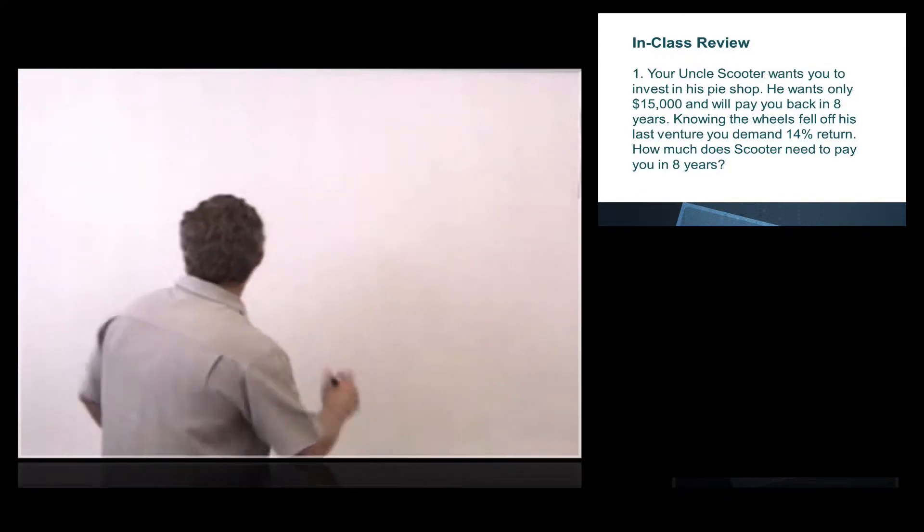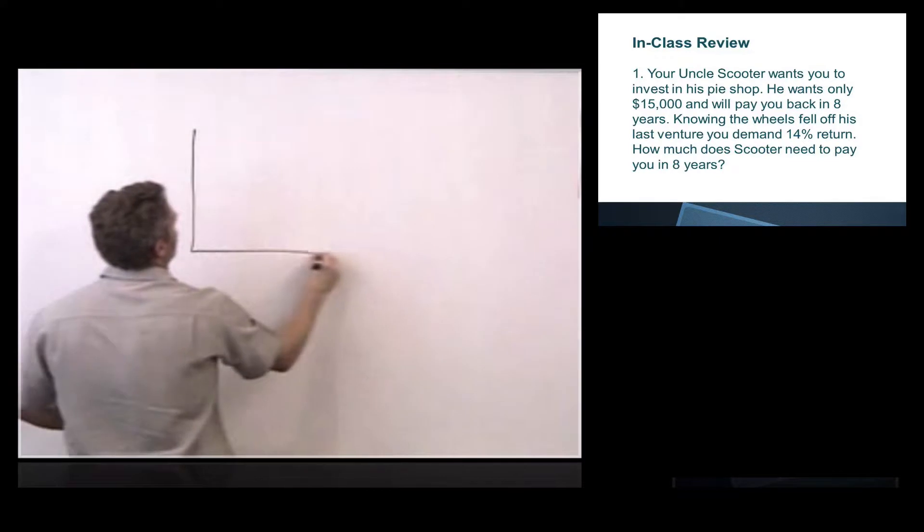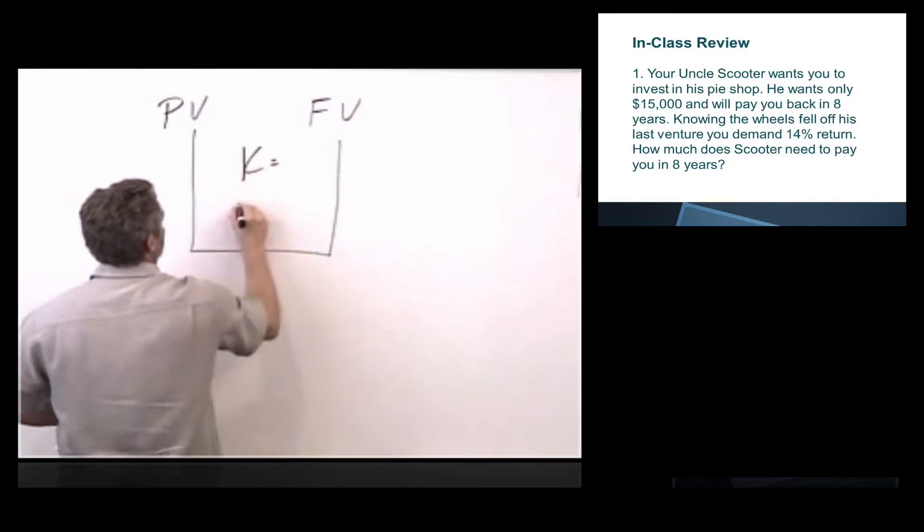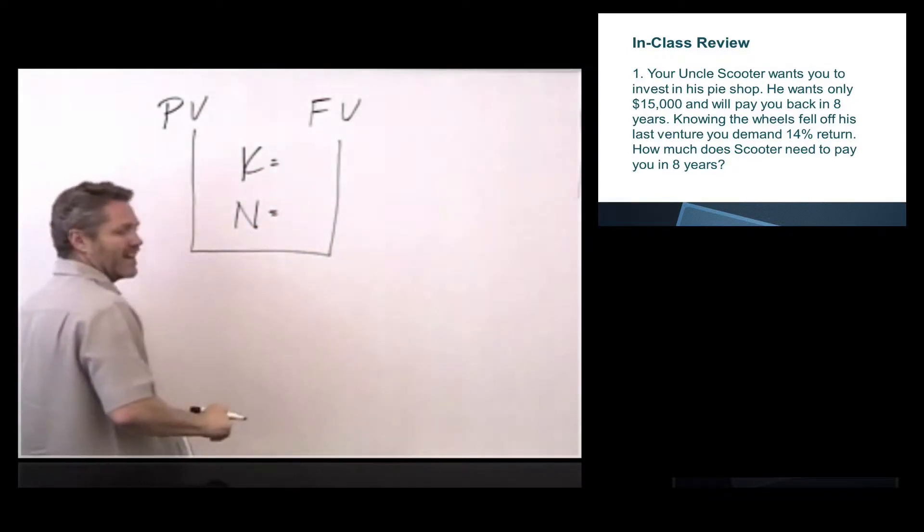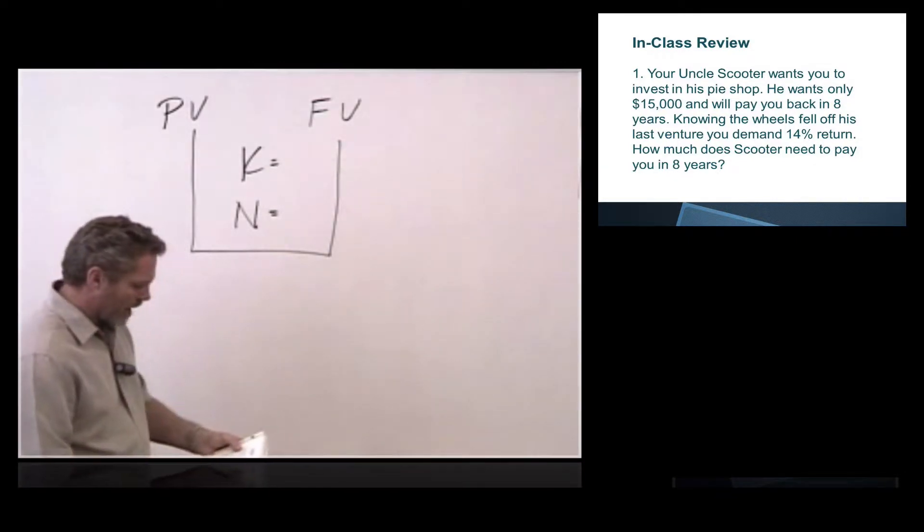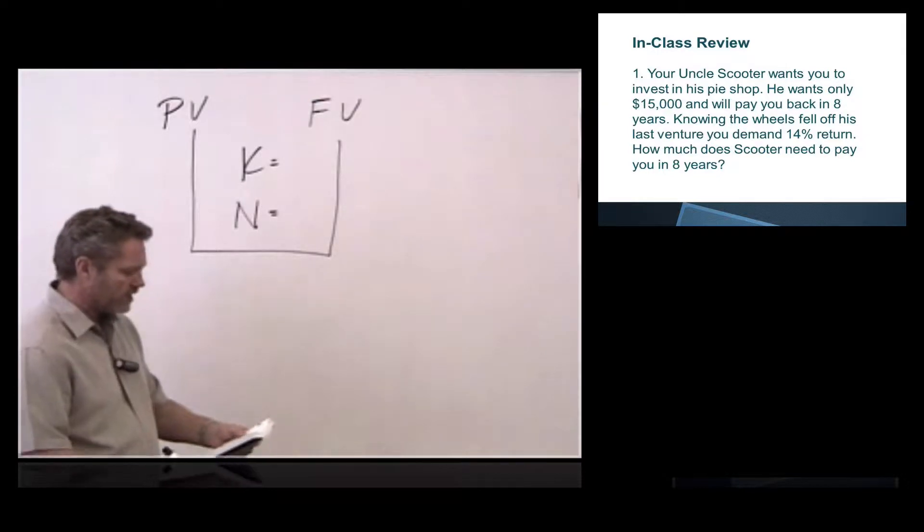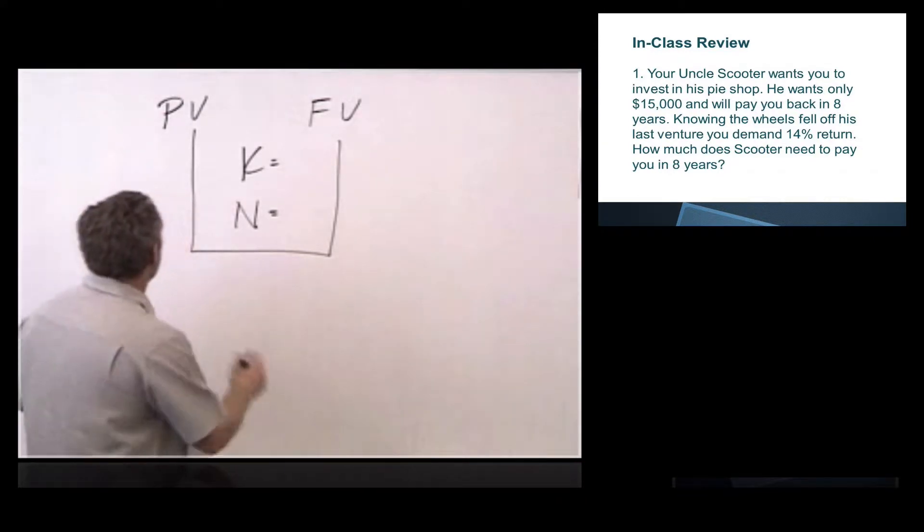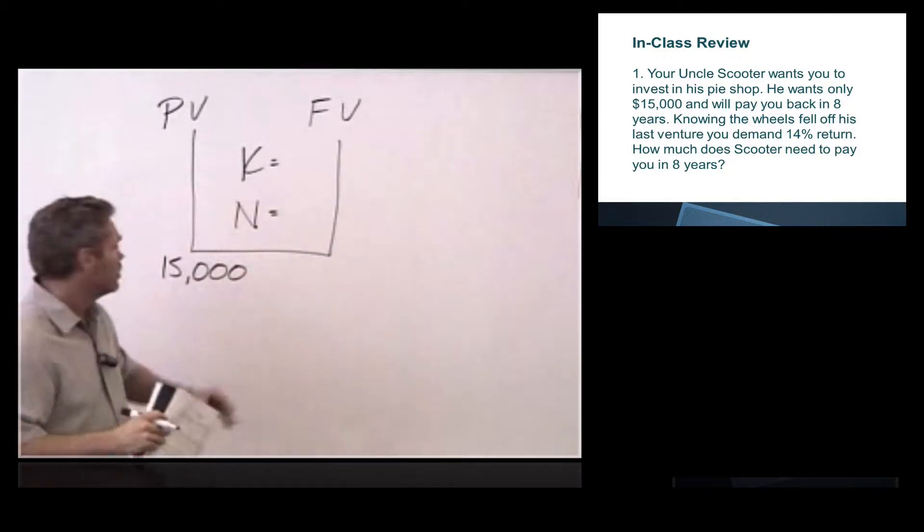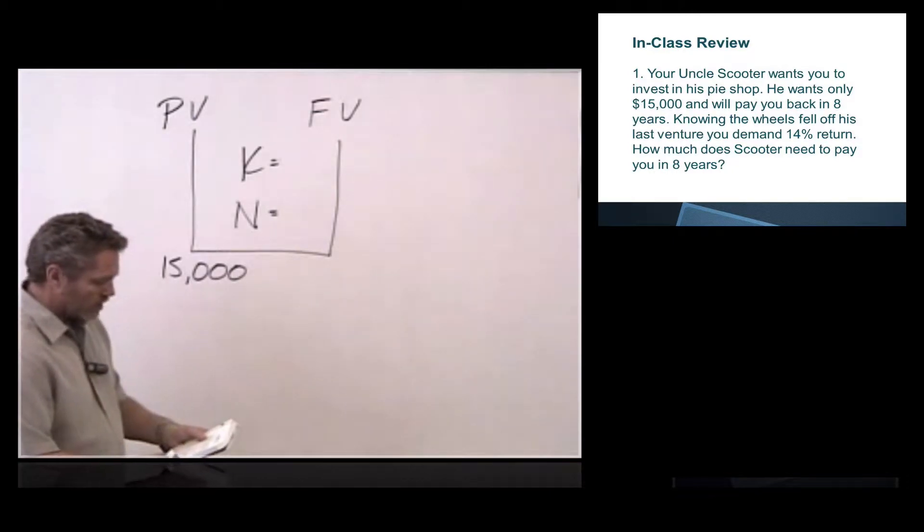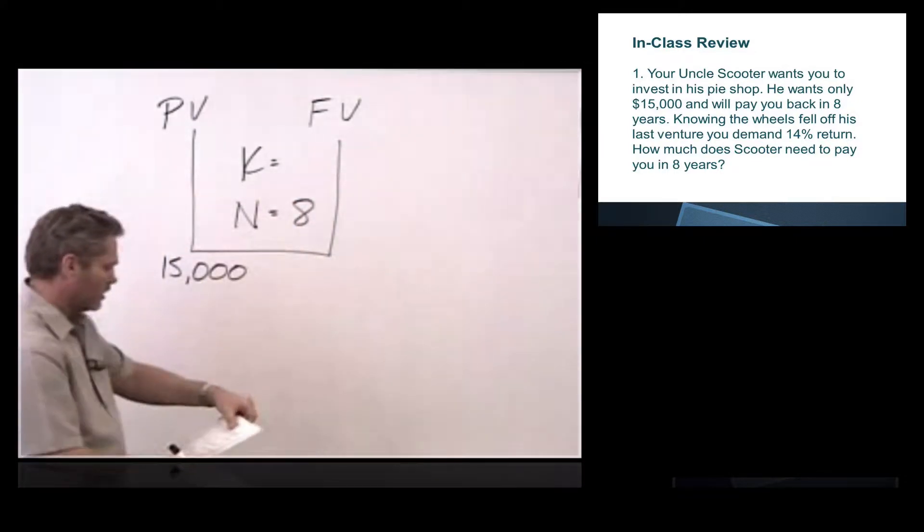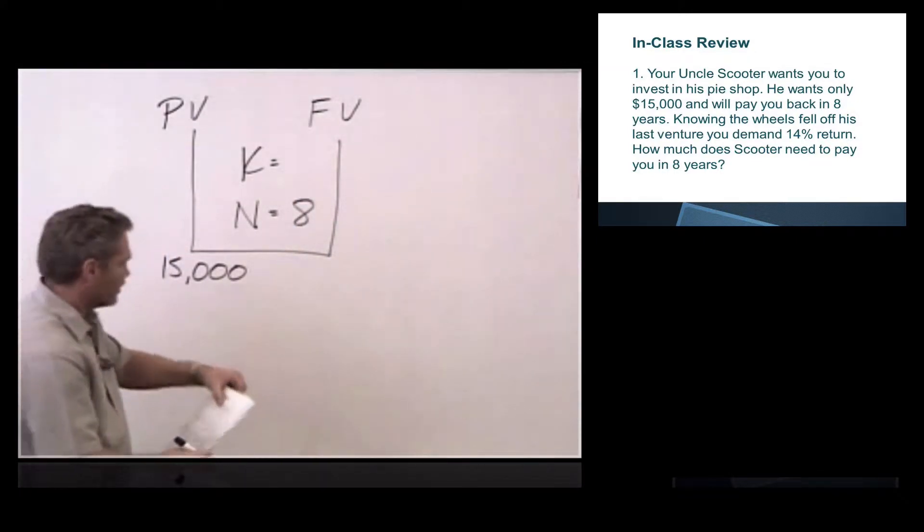How much does Uncle Scooter need to pay you in eight years? We had talked a little bit before about making this box. Present value, future value, K, N. K stands for interest rate, N is the number of periods. If we go back to this question, he wants to open his pie shop, he wants only $15,000. So he wants the $15,000 today. I'm going to place $15,000 here under present value, because presently he wants $15,000. He wants to pay you back in eight years. So N is eight, and since the wheels fell off his last venture, K equals 14.